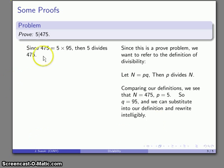I can put these together into a proof statement: Since 475 is 5 times 95, then 5 divides 475. There's the definition of divisibility, which is the same as the statement we're trying to prove.